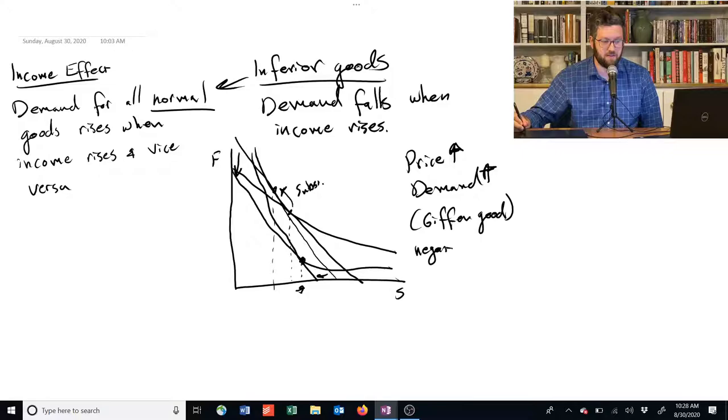And because in this case, the negative income effect, since it's an inferior good, is really strong, it's greater than the substitution effect, we end up with this Giffen good.